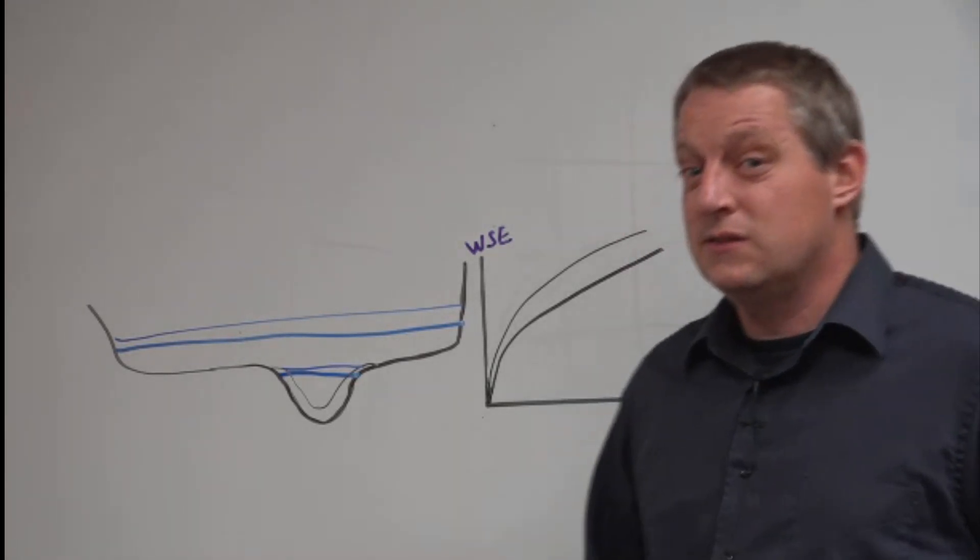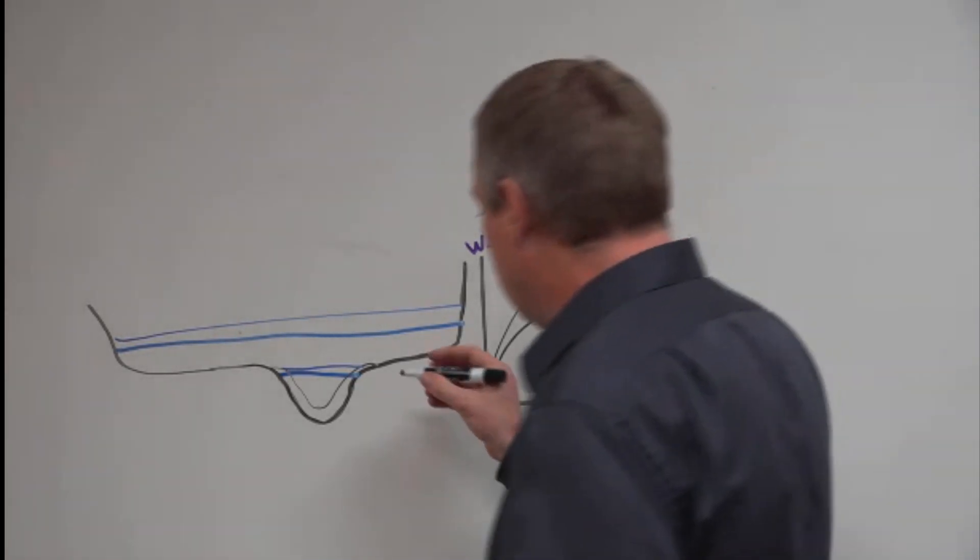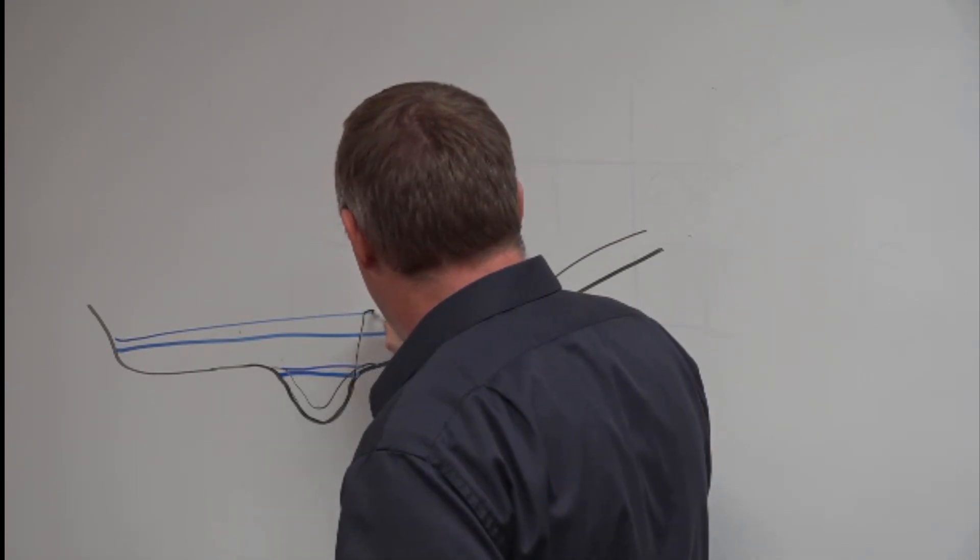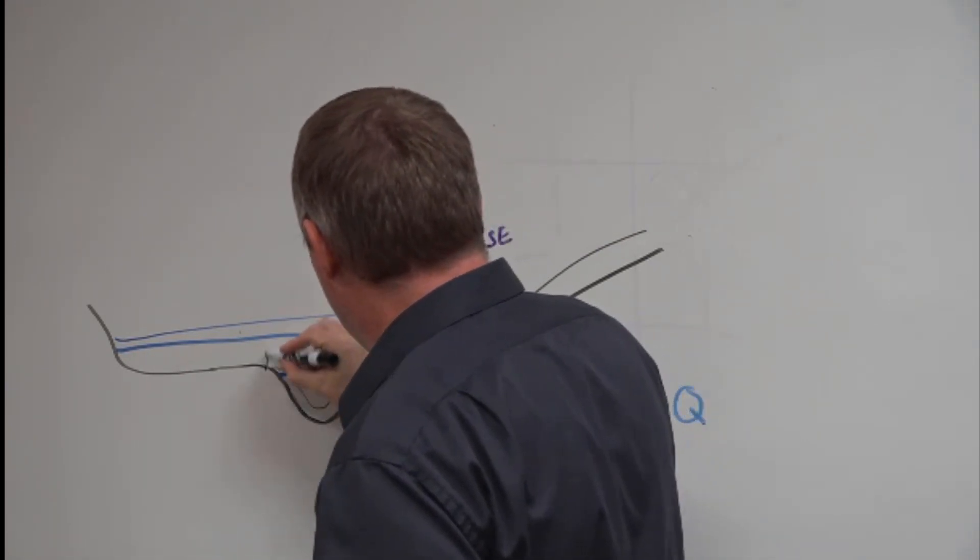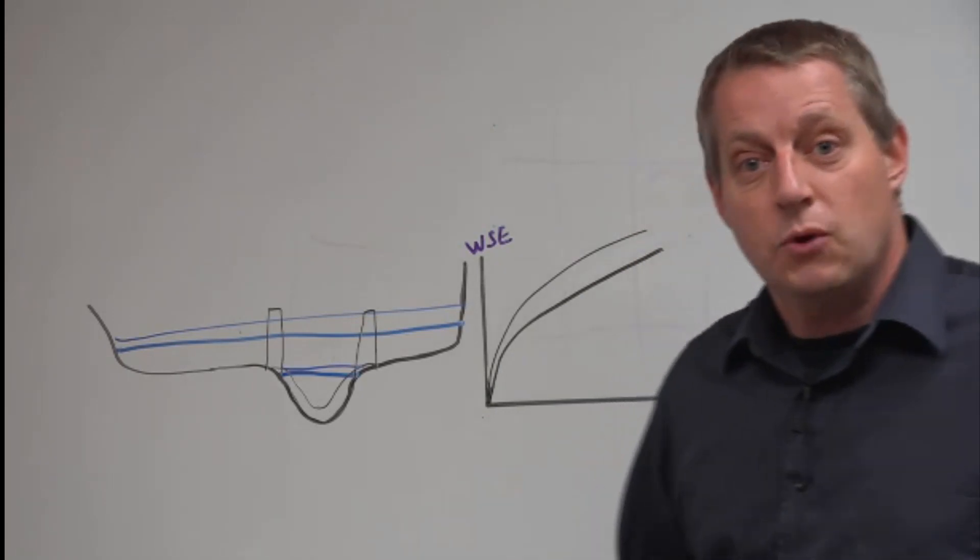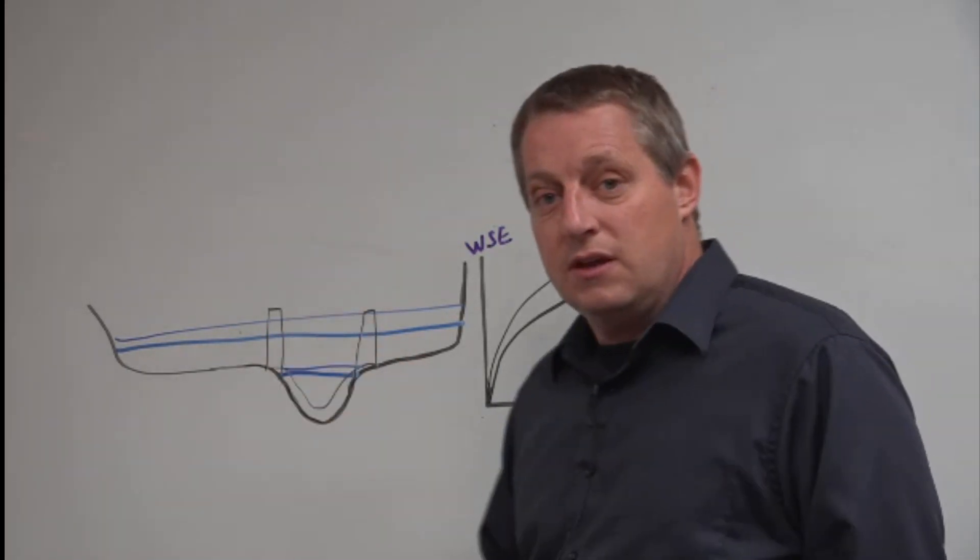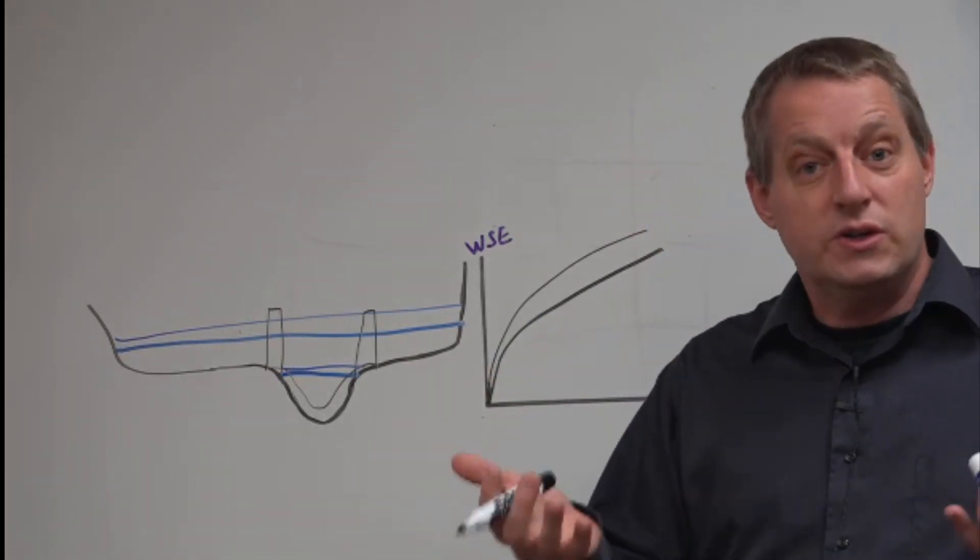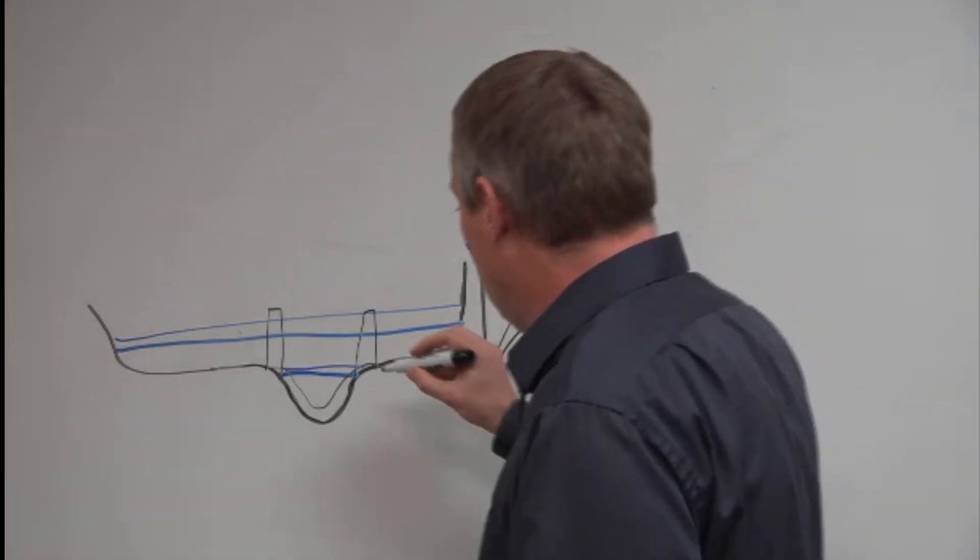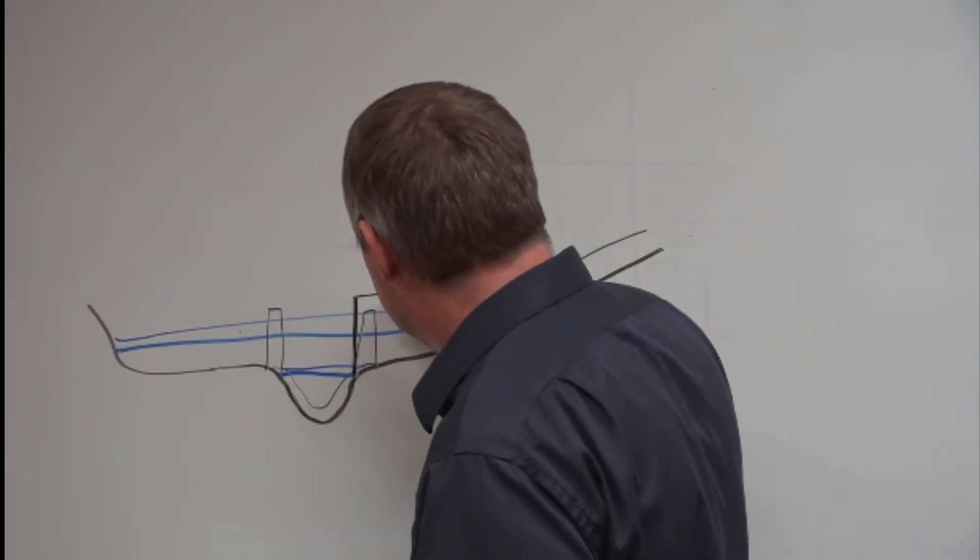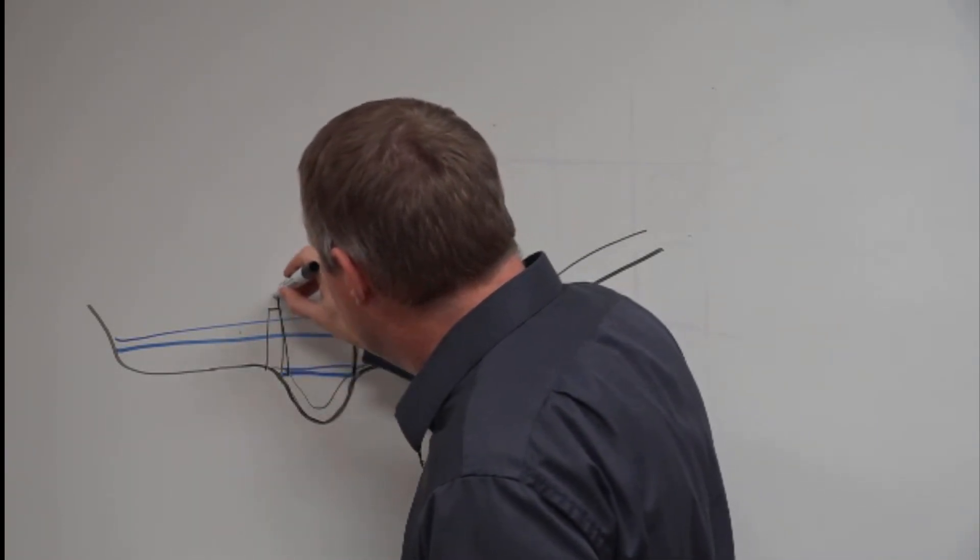Now there is a more insidious version of this process. And let's assume that we have levees. We're going to build levees here. And so over time, we're going to get deposition inside of our levees. And so that's going to steal some of the conveyance from a much smaller conveyance area and increase the stage more.